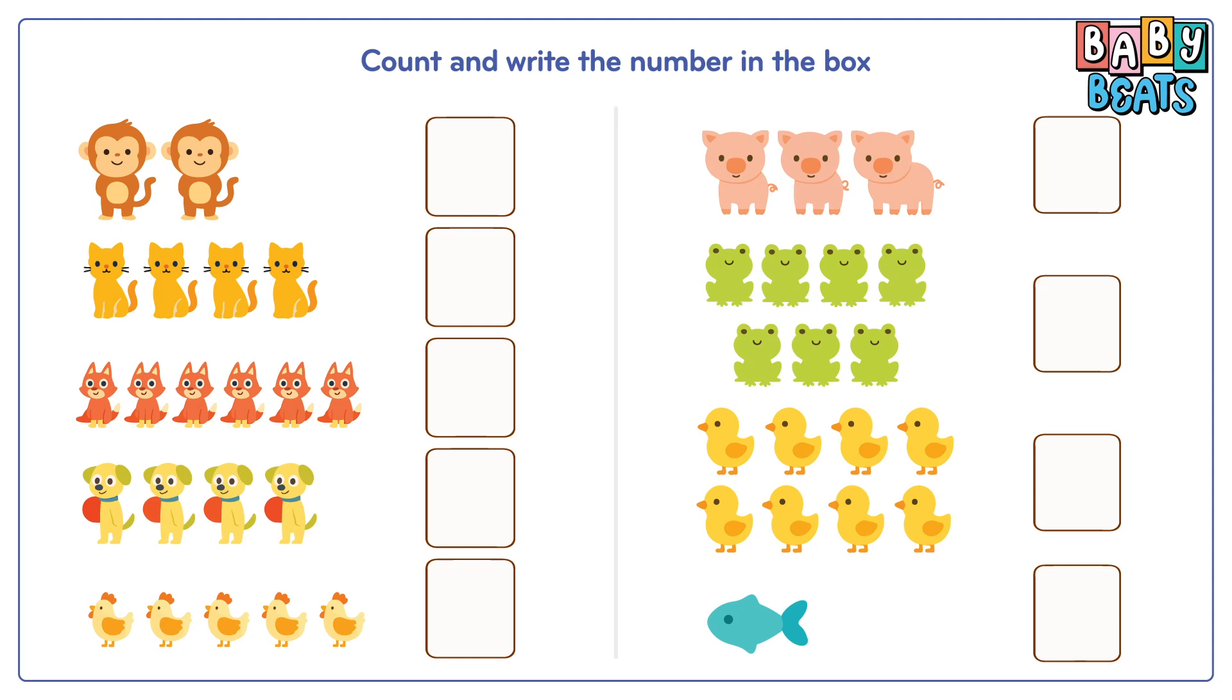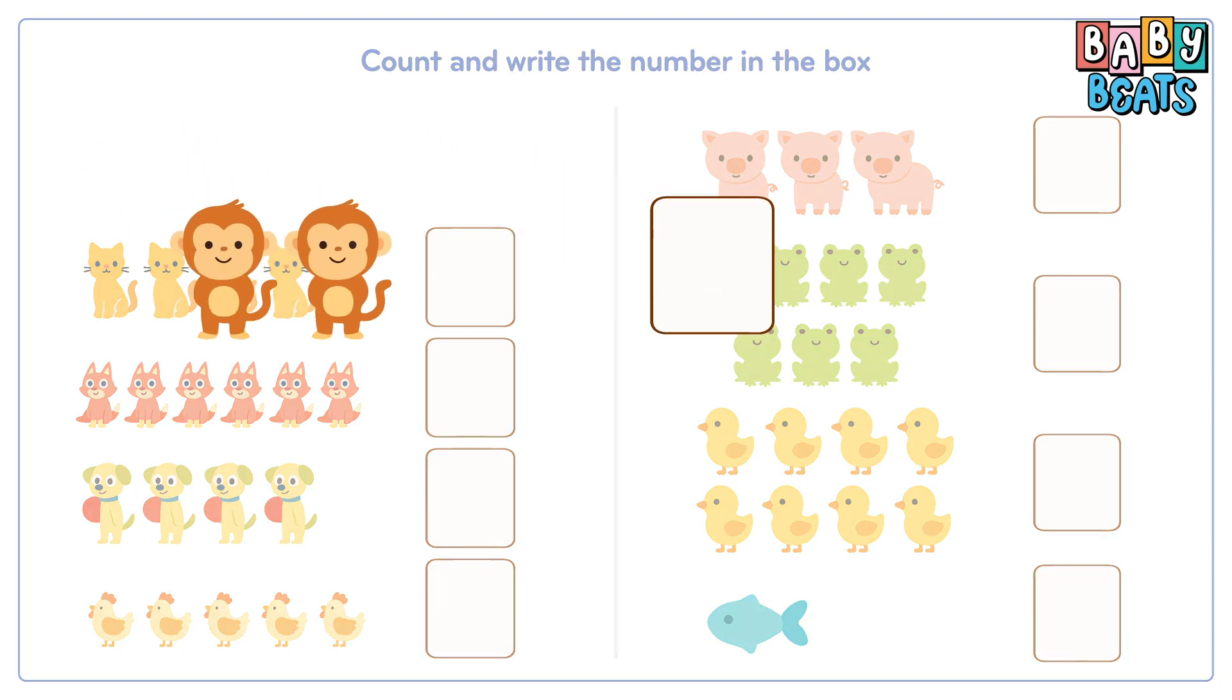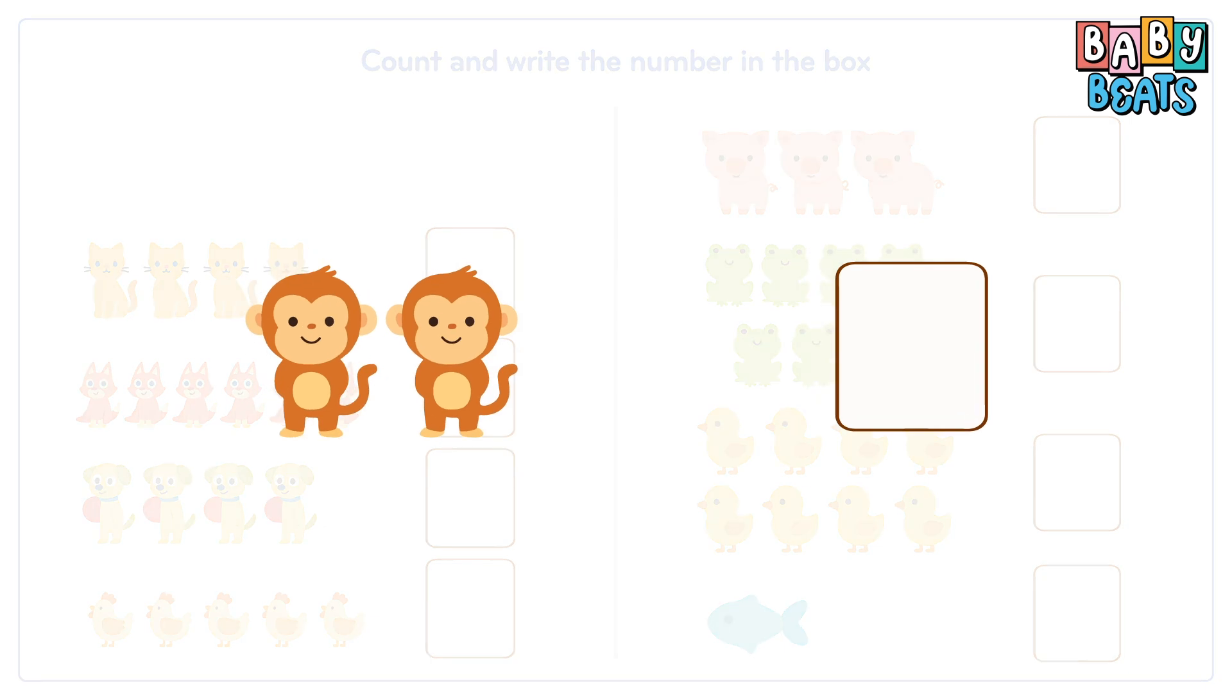Let's count the animals together and write the number in the box. First, look at the monkeys. Let's count. One, two. There are two monkeys. Write number two in the box.